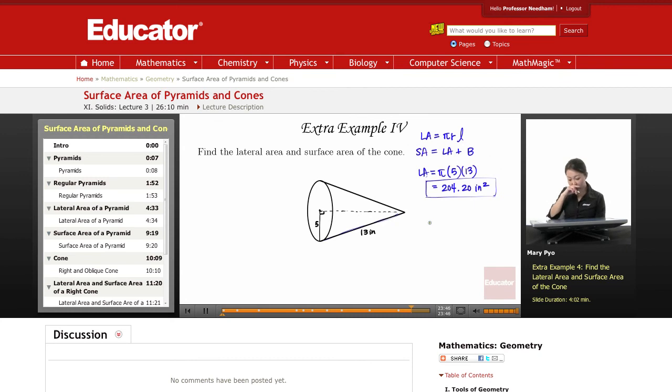Then to find surface area, let's first find the area of this base right here. So area of the circle, capital B for area of the base.